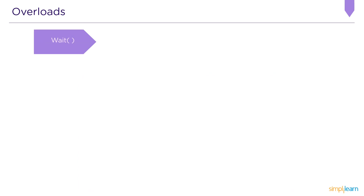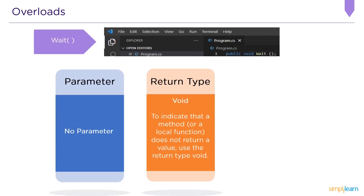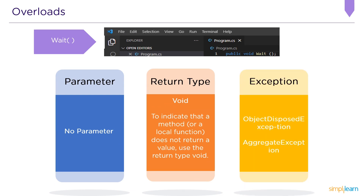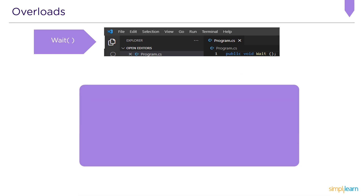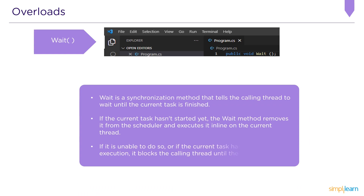Finally, we have the fifth and last overload: the basic Wait() function. As shown on screen, there are no parameters for this overload and the return type is void. Exception handling includes ObjectDisposedException when the task is disposed, and AggregateException when the task is cancelled — a TaskCancelledException object is found in the InnerExceptions collection — or when an exception is thrown during task execution.